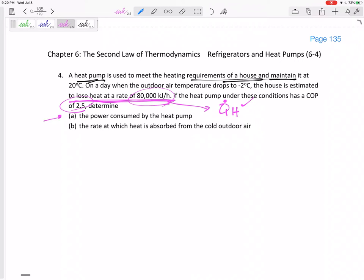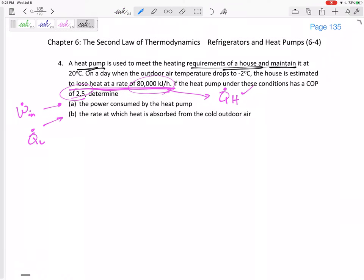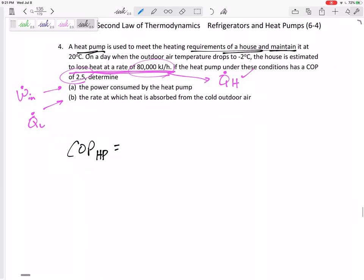So if we know Q_H, if we know COP, can we find everything else? Can we find the power consumed, the W net in, and the rate at which heat is absorbed from the cold outside air, that is Q_L dot? There might be more efficient ways to do this. There are a lot of different equations and sometimes you can use different equations, go about these differently, take a different route than me.